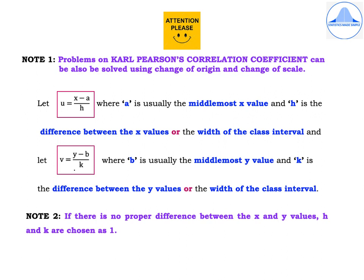This concept has been used in my previous videos on the arithmetic mean. Let u equal x minus a divided by h. When the x values are subtracted from some arbitrary value a, that is called change of origin, and when divided by h, that is change of scale. Here a is usually the middlemost x value and h is the difference between x values or the width of the class interval. Similarly, let v equal y minus b divided by k, where b is the middlemost y value and k is the difference between y values or the width of the class interval.